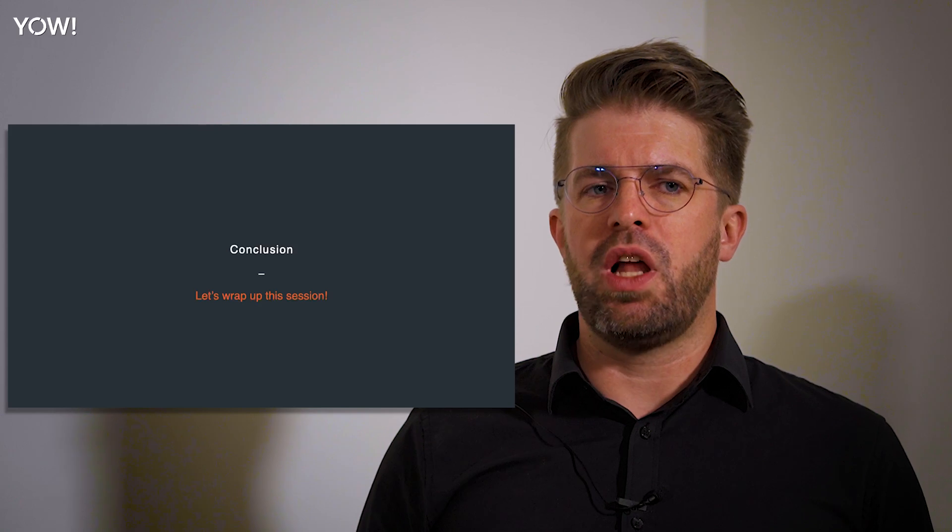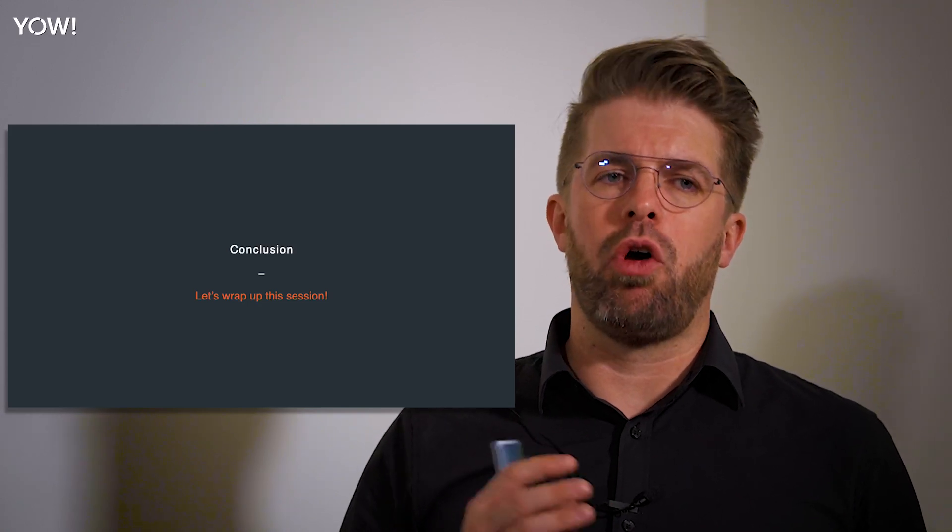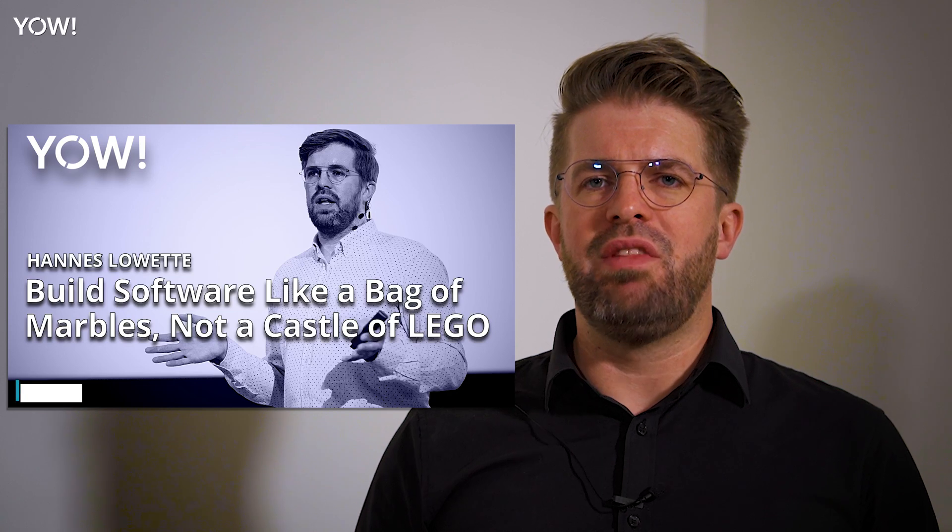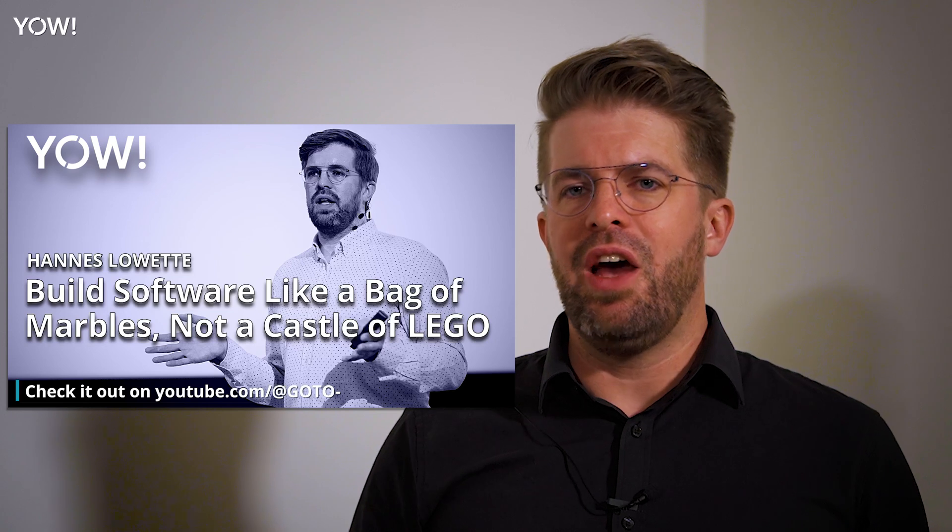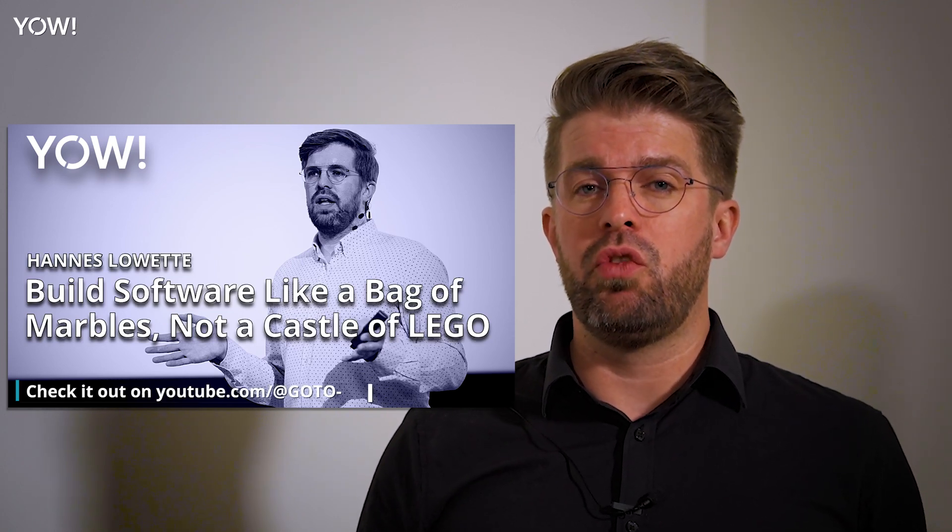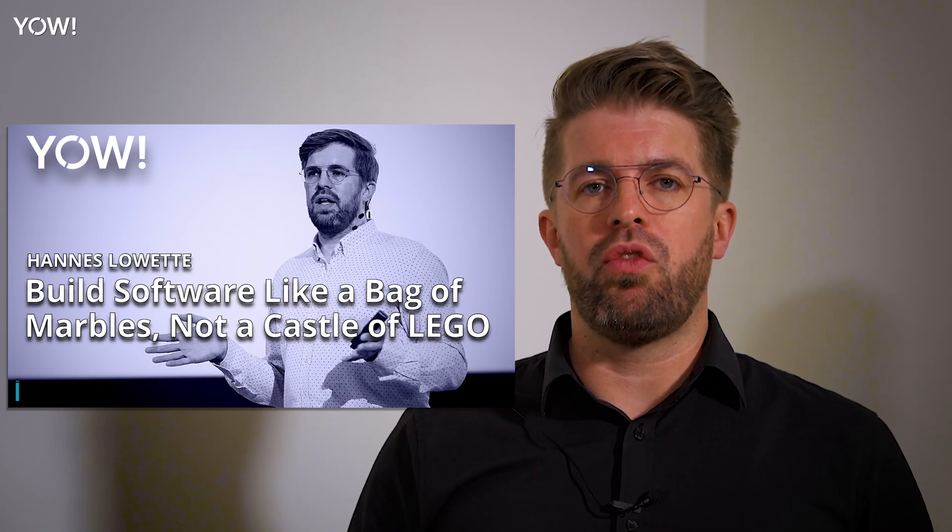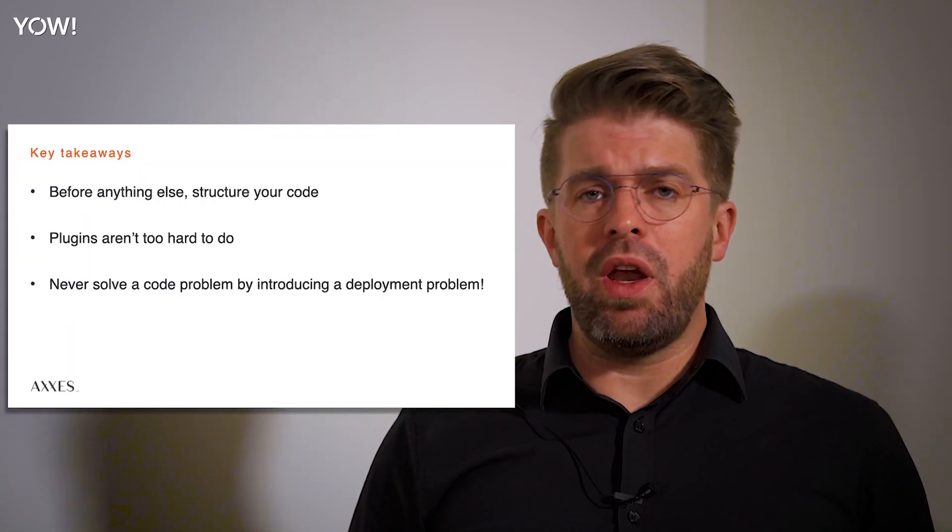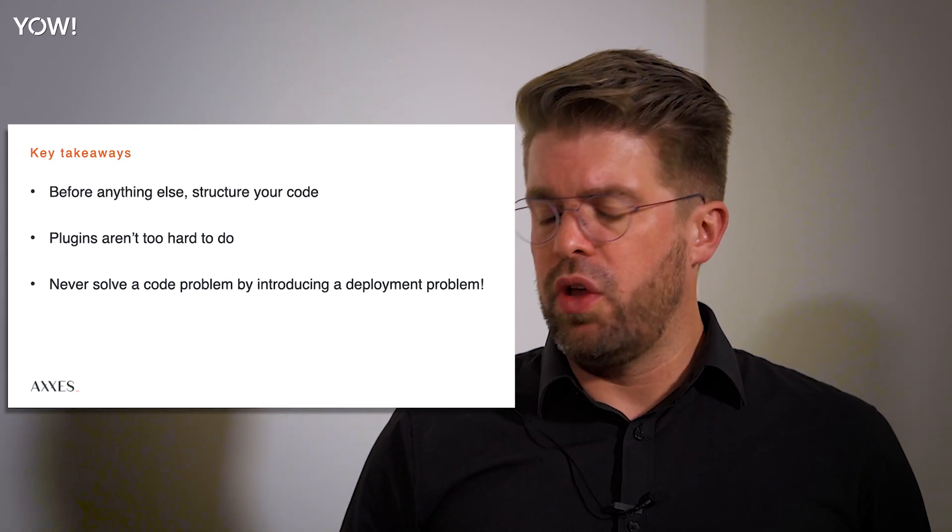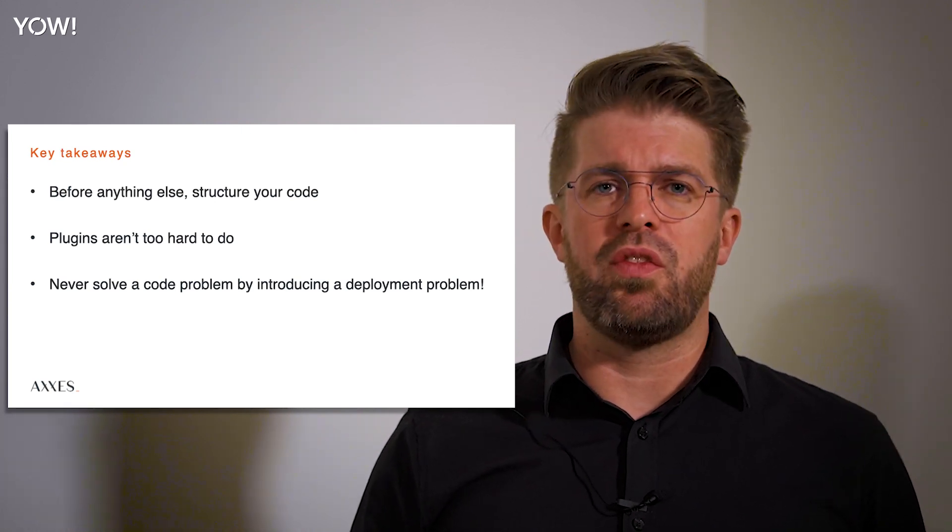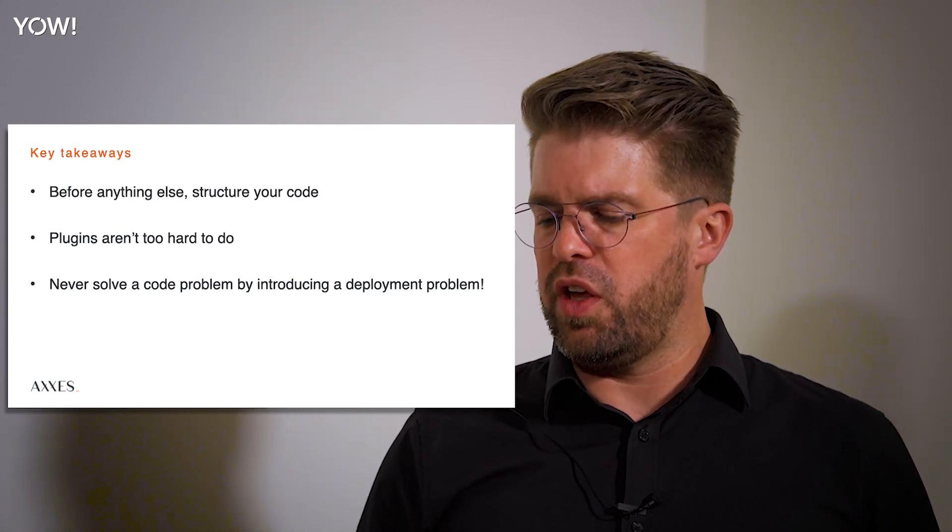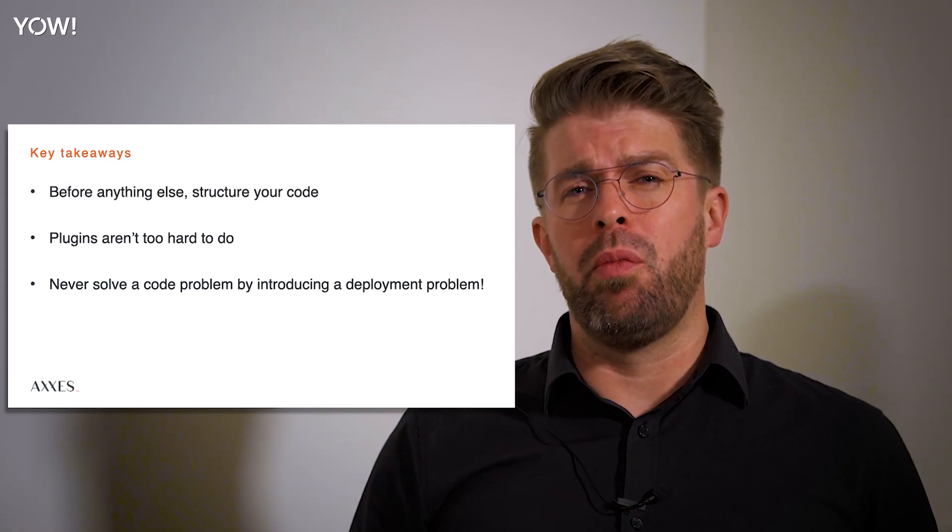Once you figure all of that out, you will have a system that makes it very easy to try out new functionality, build it, add it to your deployment, remove it again without actually damaging your core application and your core monolith. Still everything will run in one process and will be easy to troubleshoot, easy to debug, all that sort of stuff. So before you do anything else, structure your code. Plugins aren't that hard to do. There's a repository I will show you on the coming slide where you can take a look at how I did it with .NET 6.